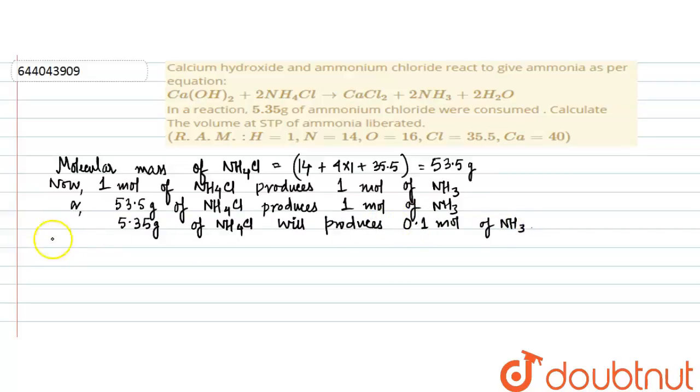One mole of NH3 occupies 22.4 liters at STP.